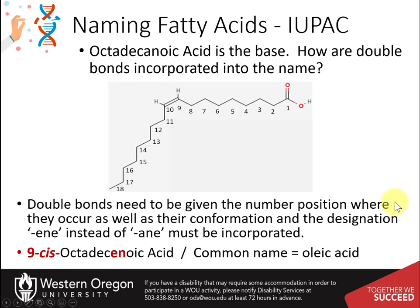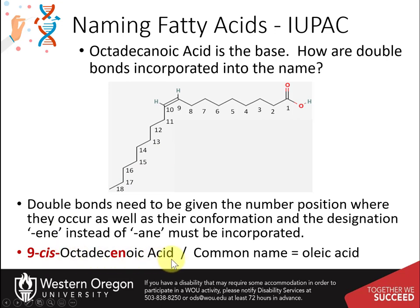Finally, we need to define where the double bond is located. In the IUPAC system, chain numbering starts from the position of the major functional group — the carboxylic acid at carbon position 1. Counting to the double bond, we can see it is positioned between carbons 9 and 10. We designate the beginning of the double bond as carbon 9, and indicate cis to complete the name. Thus our compound is 9-cis octadecenoic acid, with the common name oleic acid. If you do not see the cis designation shown for a fatty acid with double bonds, assume they are in the cis conformation.